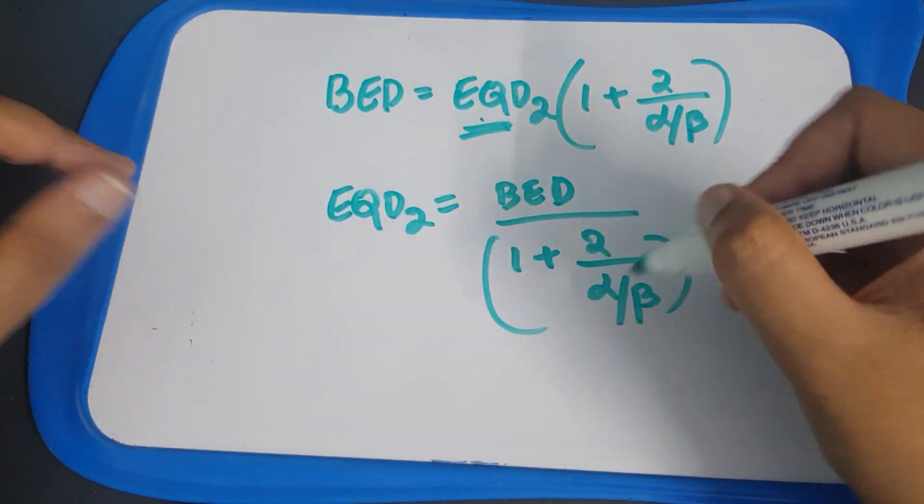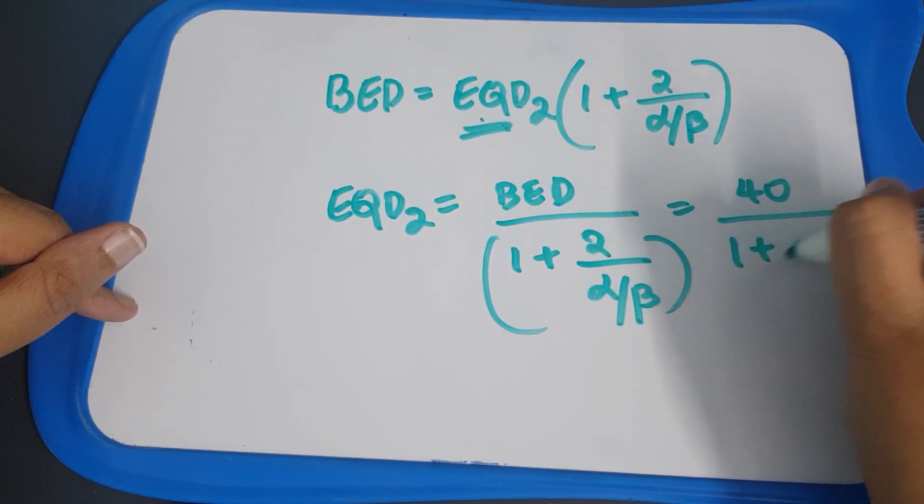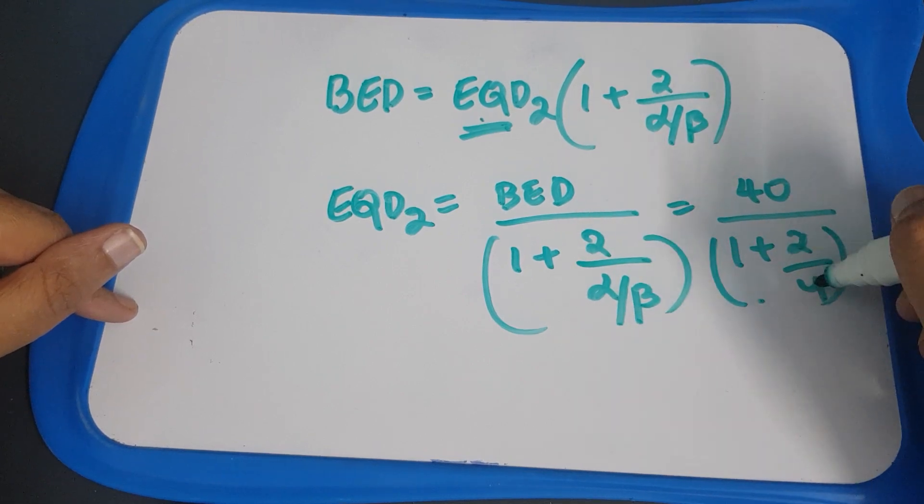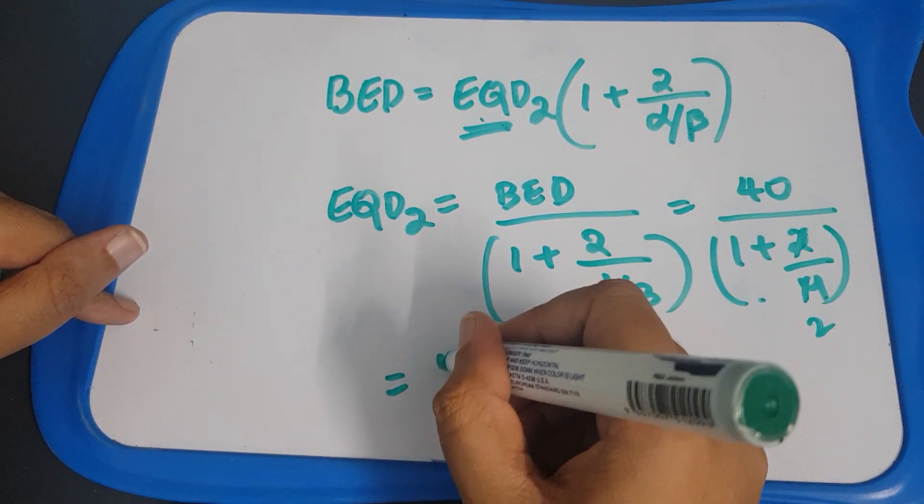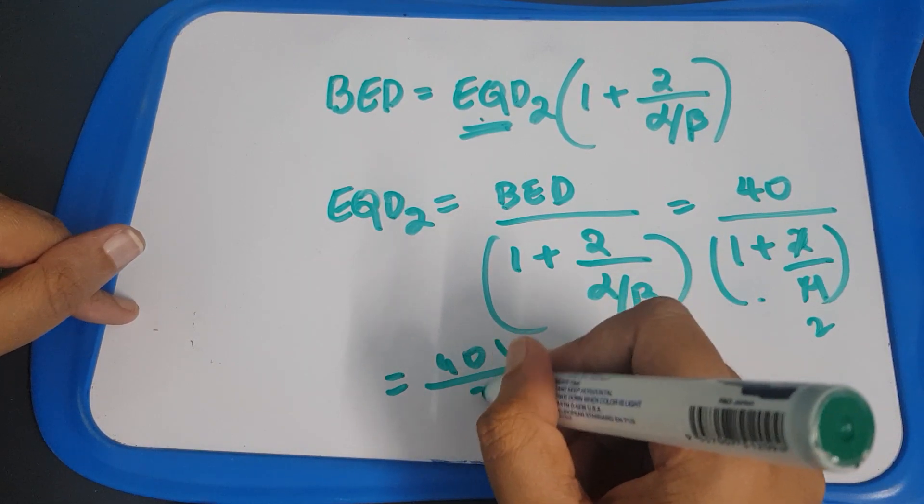EQD2 is equal to BED divided by 1 plus 2 alpha by beta. Now, for the same case, if you put, so BED as we calculated it was 40, 1 plus 2 by 4. 4 ones, the 2 ones are 2 twos.